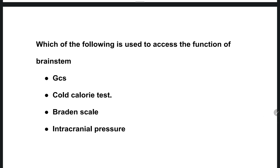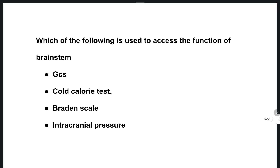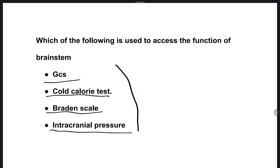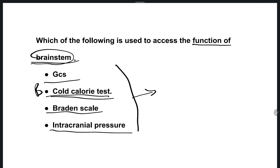The next question: which of the following is used to assess the function of the brain stem? Options are Glasgow Coma Scale, cold calorie test, Braden scale, or intracranial pressure. The right answer is option B — the cold calorie test is used to find out any abnormality in the brain stem.